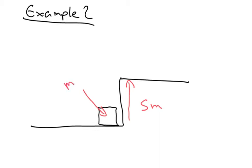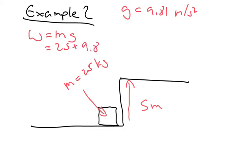So the force that we've got to do work against is the weight of the box. The weight is equal to mg, and remember g equals 9.81 meters per second squared. So the weight of the box equals 25 times 9.81, which is equal to 245 newtons.